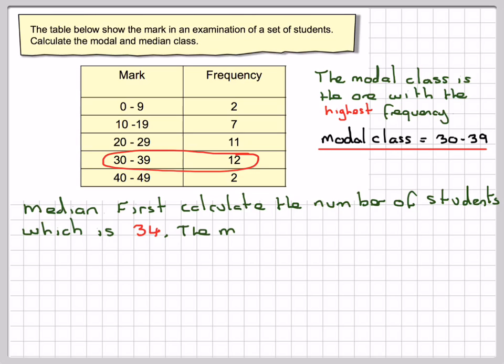And then the halfway of 34 is going to be 17. So the median will be, there will be two middle values because it's an even number of numbers, will be the 17th and the 18th values.